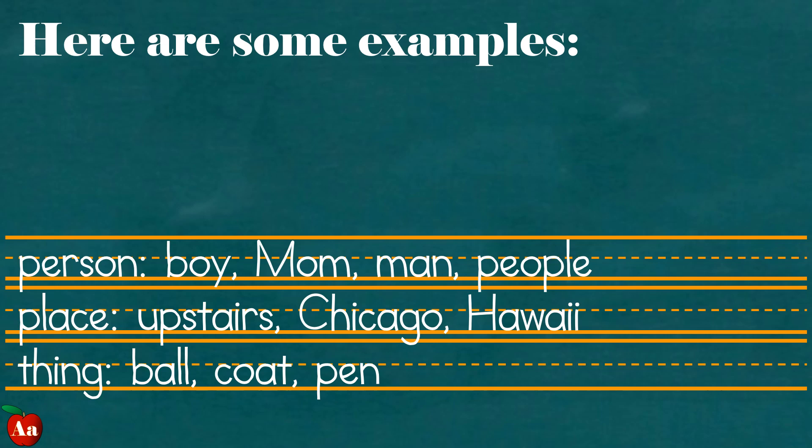For a place: upstairs, Chicago, Hawaii. For a thing: ball, coat, pen. These are all nouns.